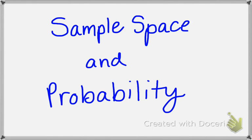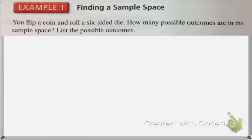Hi everybody, today we are going to talk about sample space and probability. Sample space is essentially the realm of possible outcomes that you have for a given situation. So let's look at this example: you flip a coin and roll a six-sided die. How many possible outcomes are in your sample space, and they want us to list those outcomes.